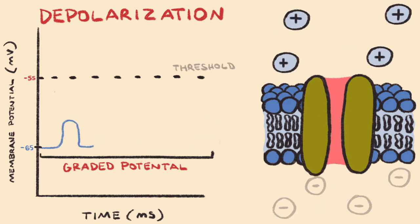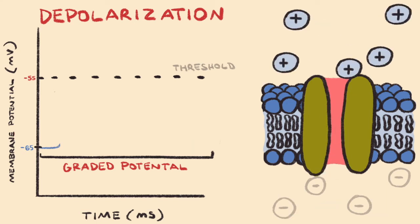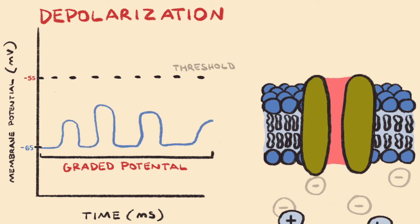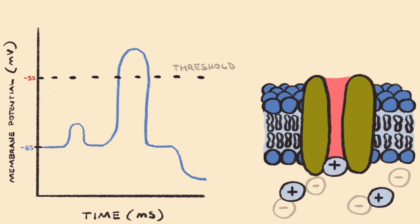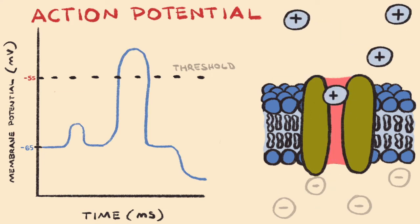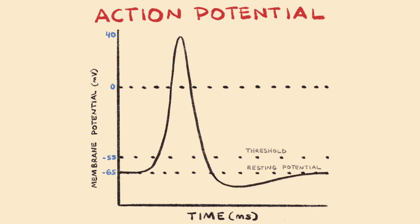If the graded potential, or a series of graded potentials, are significant enough, and the threshold of negative 55 millivolts is reached, then an action potential is generated by the neuron. An action potential is the sequence of rapid events that decreases and reverses the neuron membrane potential before restoring it back to the resting state.